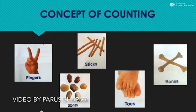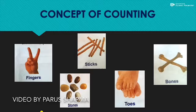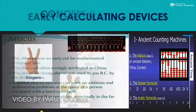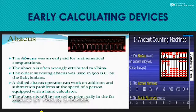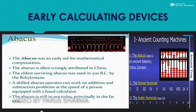After using fingers and stones, when people had to do more calculations — a lot of calculations — they needed an instrument that could calculate for them very fast. So for that, the first device was invented, and its name is Abacus.